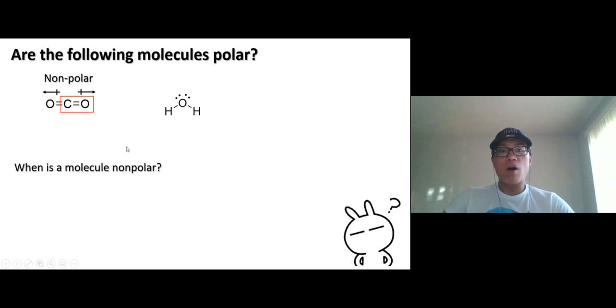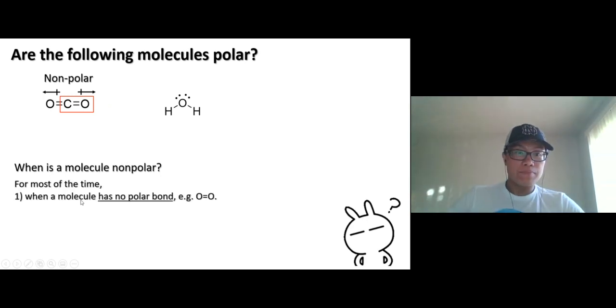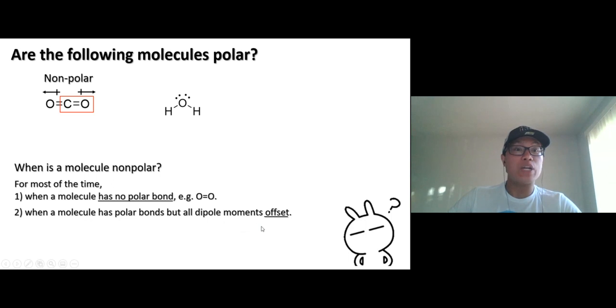So when is molecule non-polar? One, for most of the time, not always, but most of the time, when a molecule has no polar bond, for example, oxygen gas, O=O, carbon-carbon bond, or whatever. They have no polar bond. Or when a molecule has polar bonds but the dipole moments offset, all dipole moments cancel each other out, like in the case of carbon dioxide right here.